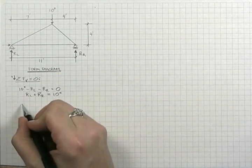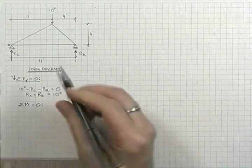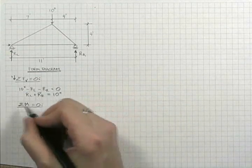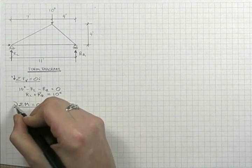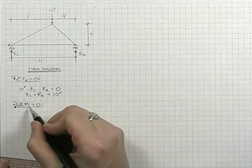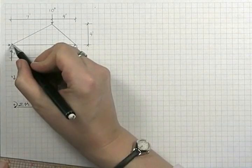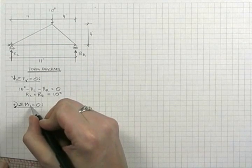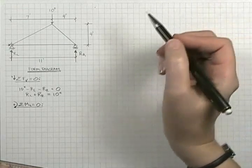So now we have to introduce our moment equation. Now again, we make an assumption for which direction we're calling positive. Again, we'll do as the book does, calling clockwise moments positive. And we need to tell which point we're summing moments about. In this case, we'll take the left-hand end, so moments on the left equal to zero. We could do it on the right-hand end, it doesn't matter.